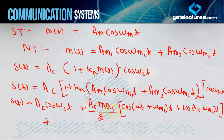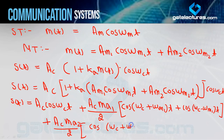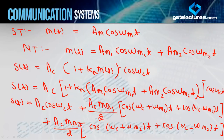Same आपका ωm2 के लिए भी हो जाएगा। तो directly लिख सकते हैं: Ac·Ma2/2 · [cos(ωc+ωm2)t + cos(ωc−ωm2)t]. और suppose करिए अगर यहाँ पर 3 terms होते, तो आप same ऐसे expand करते चले जाते। Single tone में हमने सिर्फ cos(ωm·t) लिया था, यहाँ m1, m2 expand करते चले जा रहे हैं — कुछ नया नहीं है, same है single tone के जैसा।